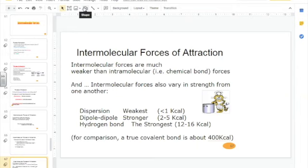London dispersion is actually the weakest force. If you look at the kilocalories, or kcal, it's less than one, typically. Dipole-dipole is a little bit stronger, 2 to 5 kilocalories. And hydrogen bonds are the strongest, which is 12 to 16 kilocalories.